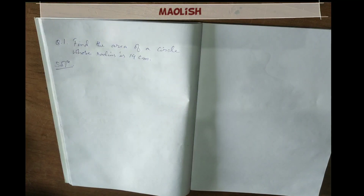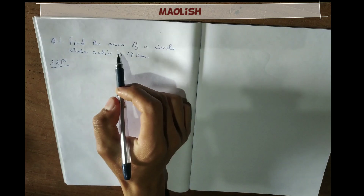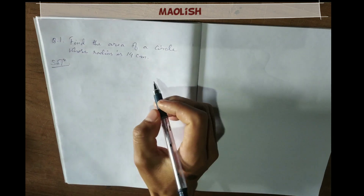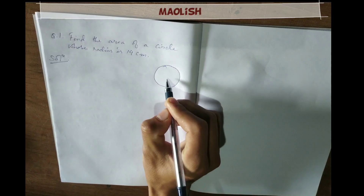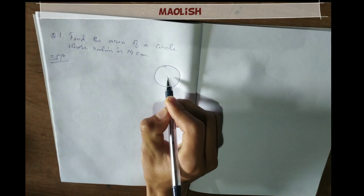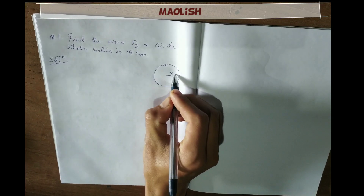Okay, here is the question: find the area of a circle whose radius is 14 centimeters. So area of a circle — the radius is given as 14 centimeters.